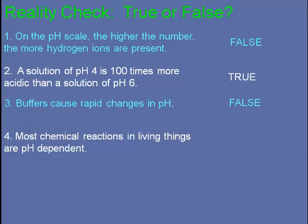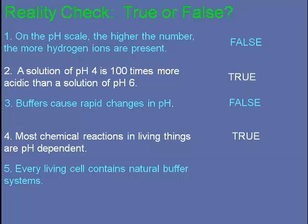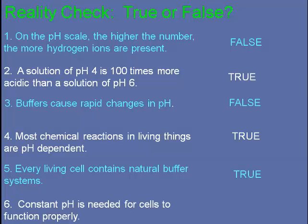Most chemical reactions in living things are pH dependent. This is true. Every living cell contains natural buffer systems. Also true. Constant pH is needed for cells to function properly. True. That concludes the video on pH.